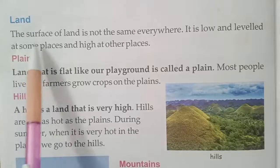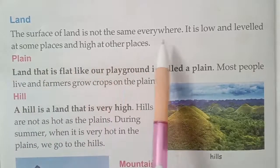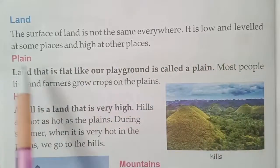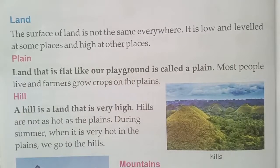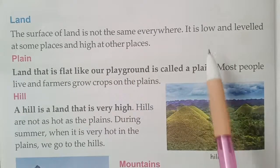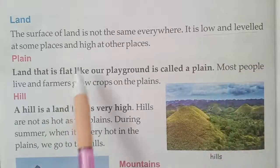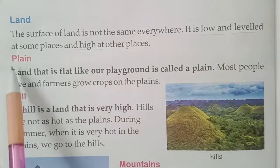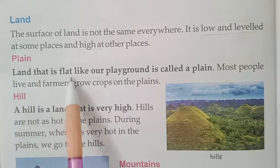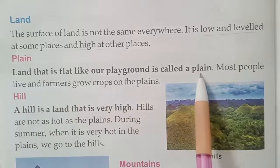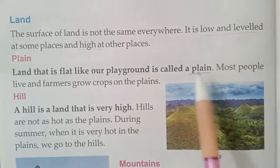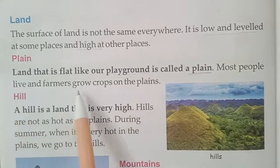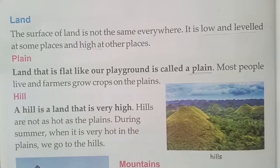Land. The surface of land is not the same everywhere. It is low and leveled at some places and high at other places. Now, let us see the plain. Land that is flat like a playground is called a plain. Most people live and farmers grow their crops on the plain.